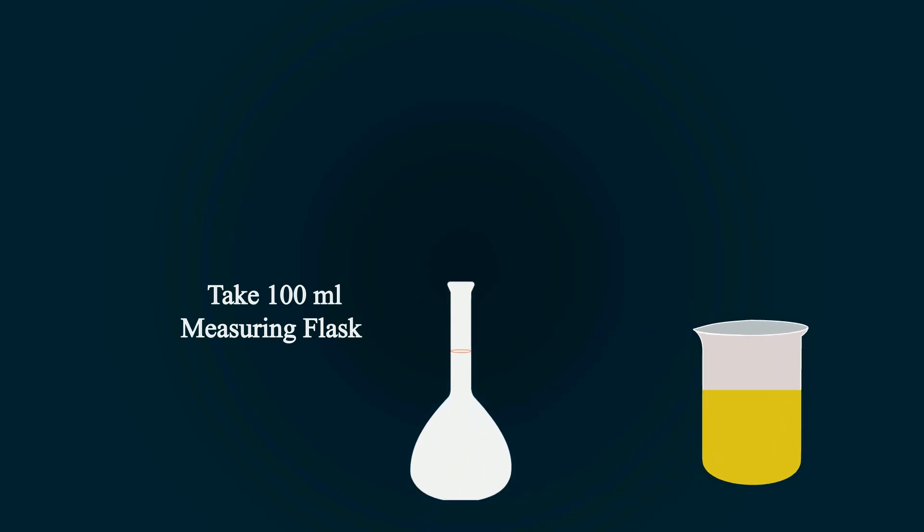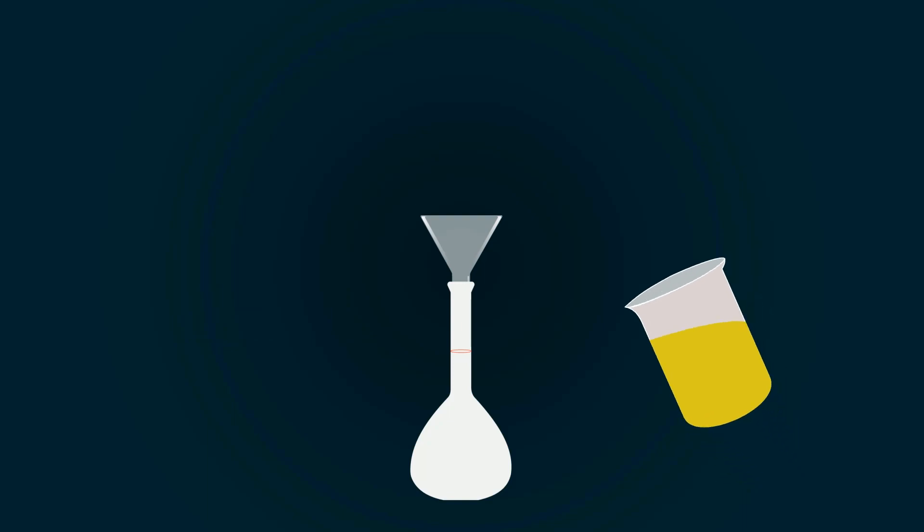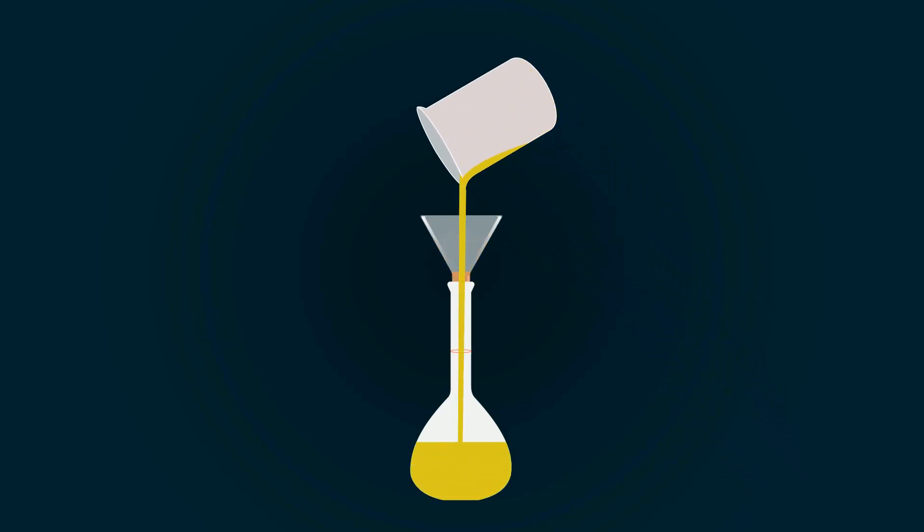Now take a measuring flask of 100 milliliters and put a funnel on the top of the flask. Start pouring all the solution into the volumetric flask.